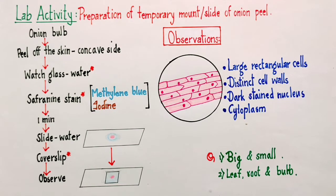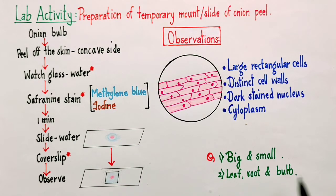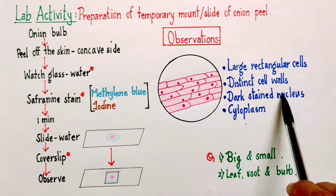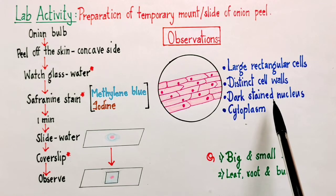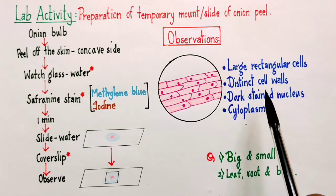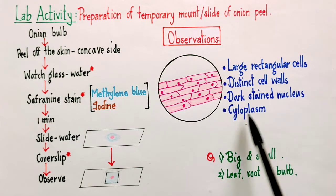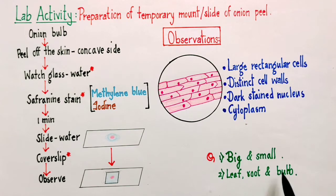However, one thing we have to remember is that whether it is a cell from leaf or root or bulb of onion, in all the three cases we are going to see cell wall, because cell wall is one of the characteristic properties of plant cells. All of them will have cell wall, all of them will have nucleus, all of them will have cytoplasm. The only thing which is going to vary is the cell size will vary and the cell shape will vary.